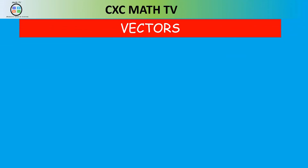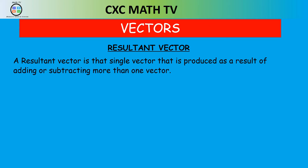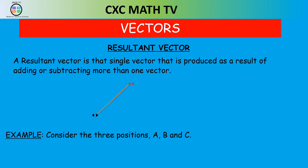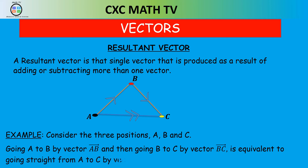The next thing is what is known as a resultant vector. A resultant vector is that single vector produced as a result of adding or subtracting more than one vector. Consider three points A, B and C. Going from A to B by vector AB, then from B to C by vector BC, is equivalent to going straight across from A to C. This vector going from A to C is known as the resultant vector.